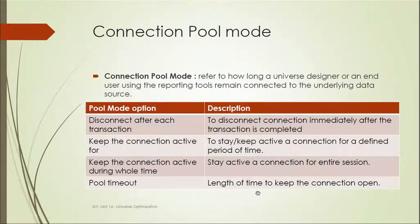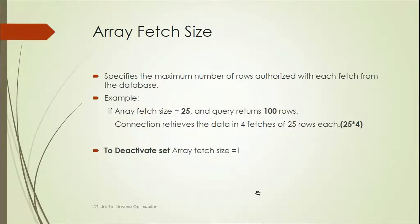Pool timeout is the length of time to keep the connection open. Array fetch size specifies the maximum number of rows retrieved with each page from the database. For example, if the array fetch size is set to 25 and the query returns 100 rows, the connection will retrieve data in four pages of 25 rows each.